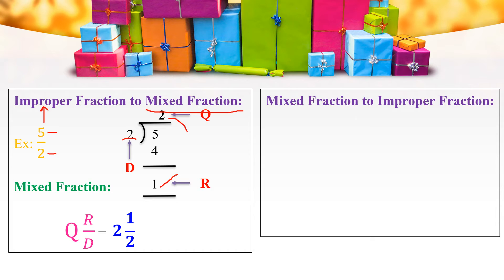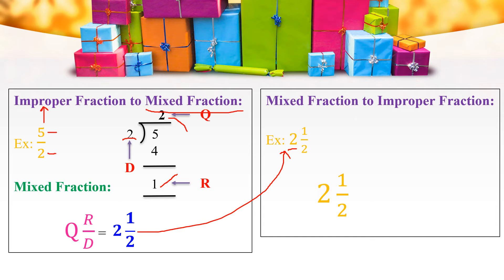Similarly, we can write a Mixed Fraction in terms of an Improper Fraction. Let us consider the same Mixed Fraction: 2 and 1 by 2. Here, 2 is the whole part and 1 by 2 is the proper fraction. Now we need to convert it into an Improper Fraction.